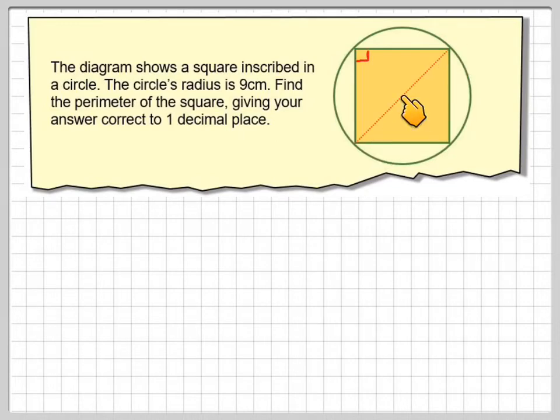So one method is to draw in the diagonal of the square and make a right-angled triangle. We know the radius of the circle is 9, therefore the length of that diagonal will be 18, i.e. the diameter of the circle.